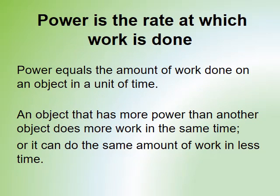Power is the rate at which work is done. Power equals the amount of work done on an object in a unit of time. Just like acceleration is the unit rate of velocity, power is the rate of work. An object that has more power than another will be able to do more work in the same amount of time, or it can do the same amount of work in less time — either of those makes something more powerful.